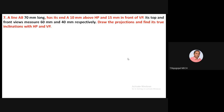From the question: true length of line AB is 70 mm. End A is 10 mm above HP and 15 mm in front of VP — so 10 mm above XY reference line and 15 mm below XY reference line. The top view of line AB is 60 mm and front view of line AB is 40 mm, as given.